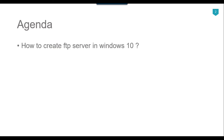Because I am an SSIS developer, there is an FTP task in SSIS which can actually download and upload files to the FTP server. So if I need to test the functionality of the FTP task, I should have access to an FTP server. In this video we will create an FTP server on the local Windows machine. So let's jump to the demo.